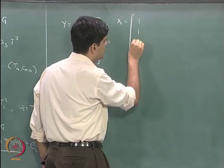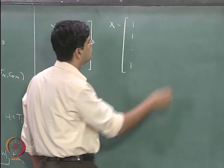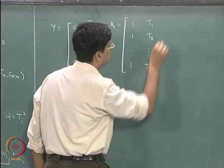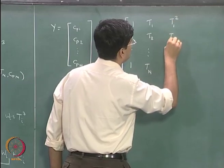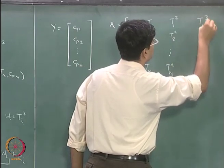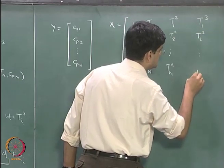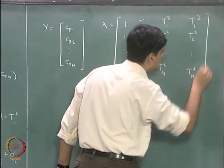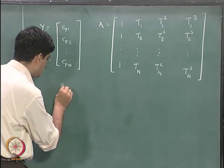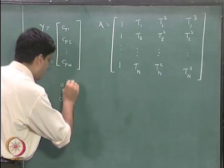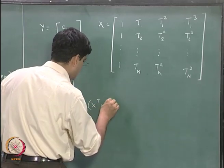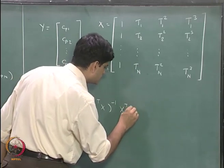We have n ones in the first column. The next column is going to be t1, t2, and so on up to tn. Then t1 squared, t2 squared, and so on up to tn squared. And then t1 cubed, t2 cubed, and so on up to tn cubed. This is our X matrix, and our coefficients a0, a1, a2, and a3 are going to be nothing but X transpose X inverse multiplied by X transpose multiplied by Y. This particular term, X transpose X inverse X transpose, is known as the left inverse.